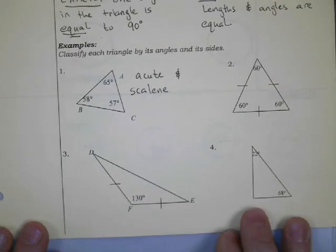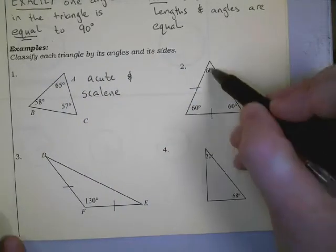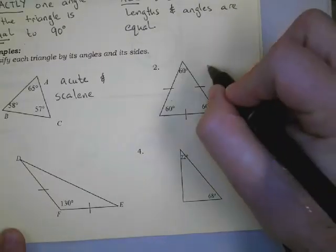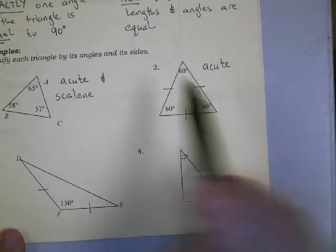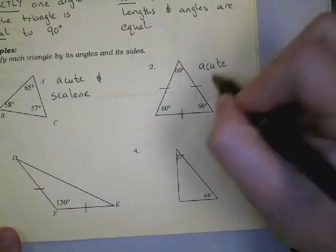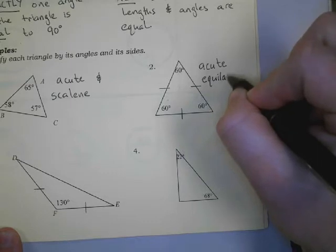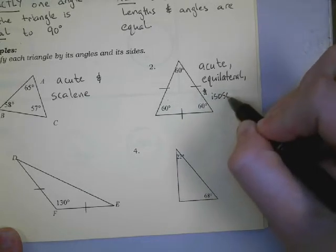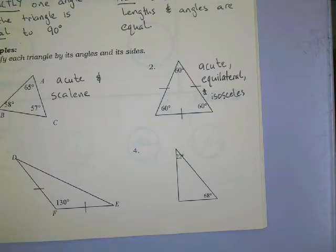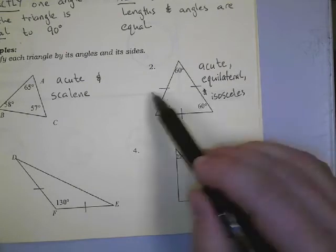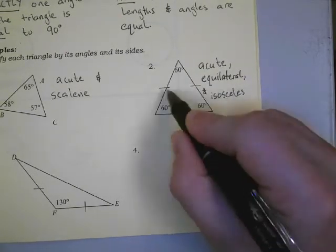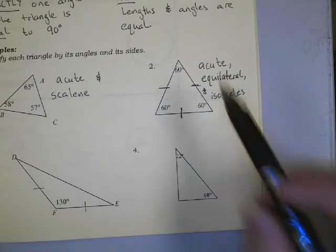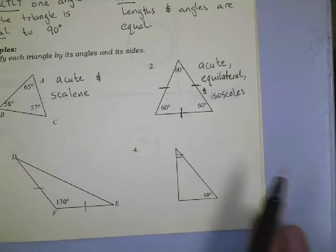Now when we look at number two, all the angles are less than 90, so it's an acute triangle. And since they're all equal, it is equilateral — and also isosceles. You might also notice the little tick marks on the sides. Those marks tell you that those sides are equal in length. We see three marks here, meaning all three sides are equal.